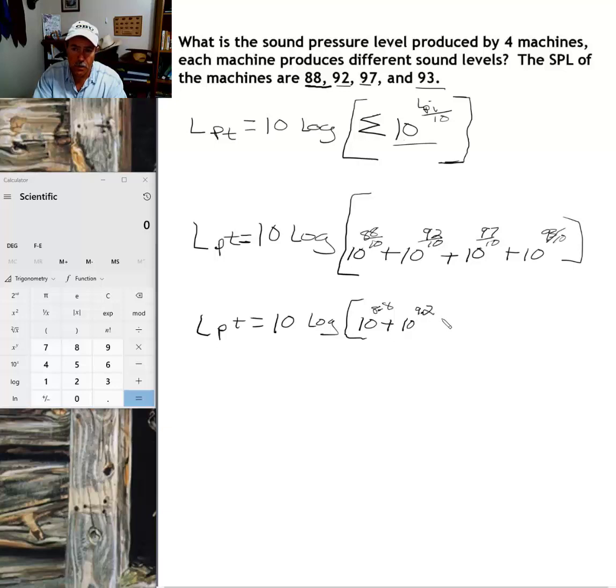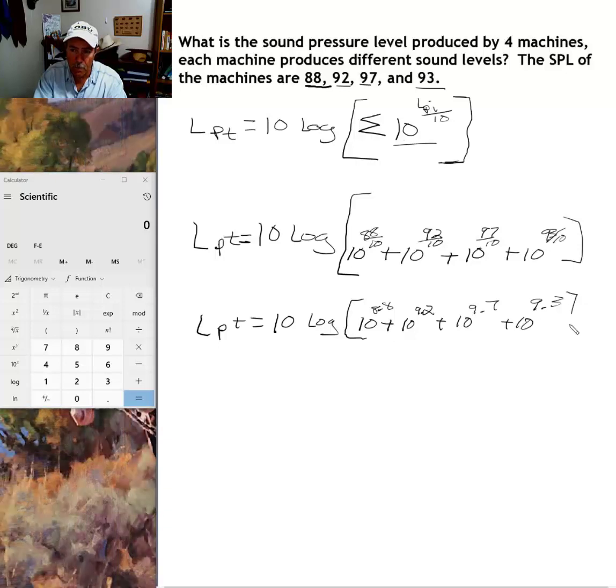So we have 10 to the power of 8.8 plus 10 to the power of 9.2 plus 10 to the power of 9.7 plus 10 to the power of 9.3.